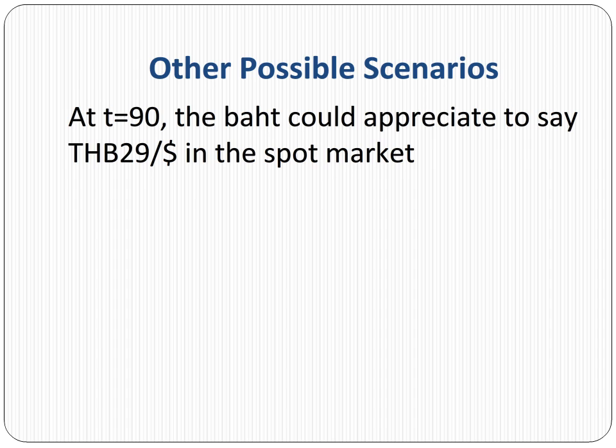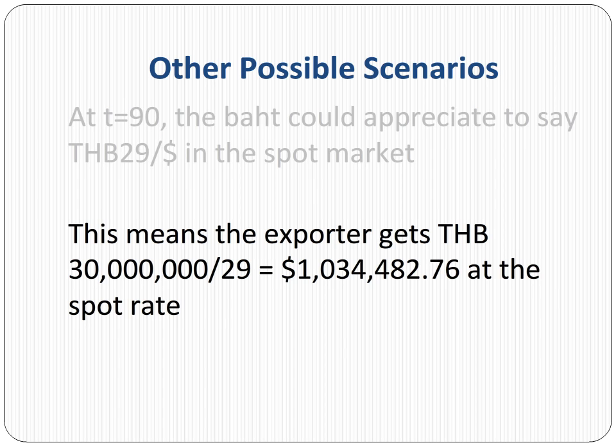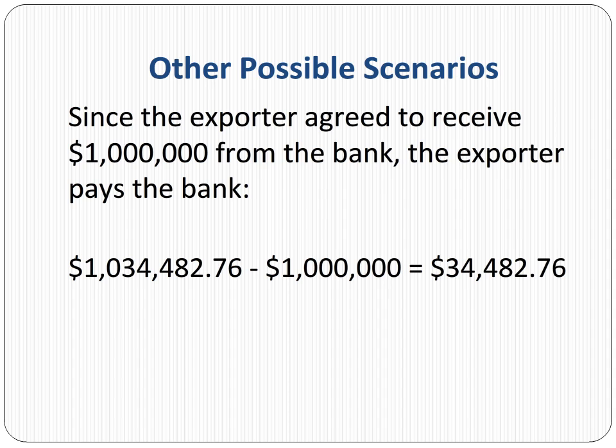Now let's consider the scenario where the baht could appreciate — to say 29 baht per dollar in the spot market at t equals 90. This means the exporter gets 1 million 34 thousand four hundred and eighty-two dollars and 76 cents at the spot rate. Since the exporter agreed to receive 1 million dollars from the bank, the exporter pays the bank 34 thousand four hundred and eighty-two dollars and 76 cents. In other words, this time the bank has won the bet.